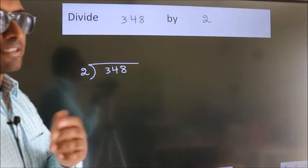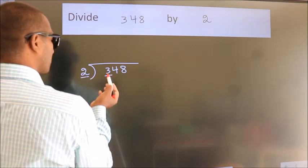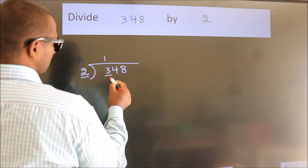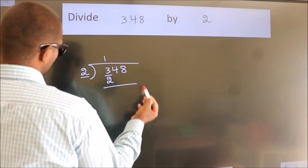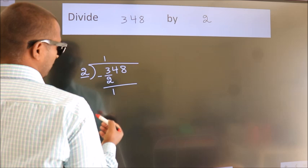Next. Here we have 3, here 2. A number close to 3 in 2 table is 2 1s 2. Now we should subtract. We get 1.